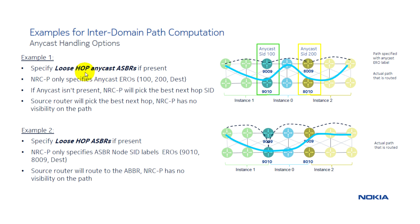With loose hop anycast ASBRs, the ERO segmentation uses the start anycast SIDs and the destination anycast SIDs between the destination domain and the intermediate domain. The second option specifies loose hop ASBRs, where instead of anycast SIDs, we simply specify the ERO of the best node SID to transit the domain.